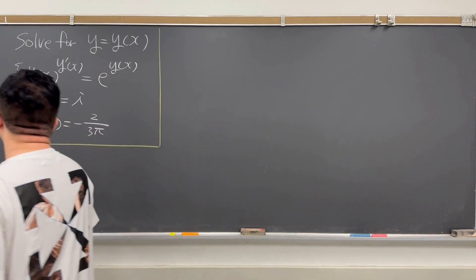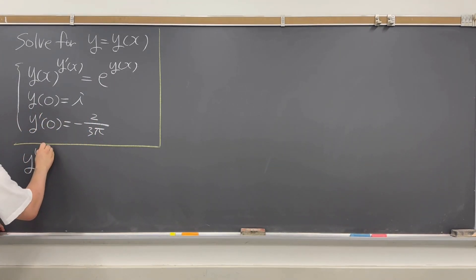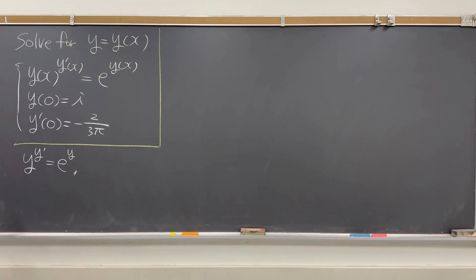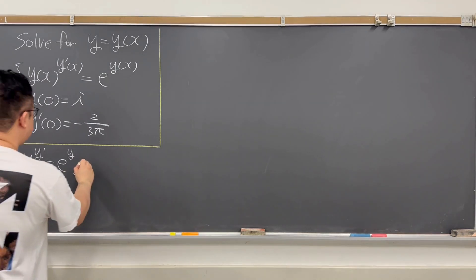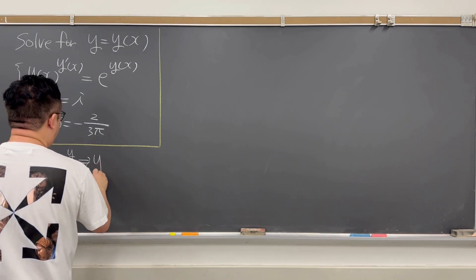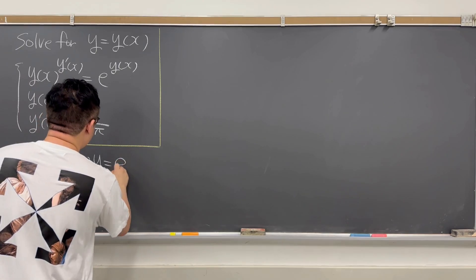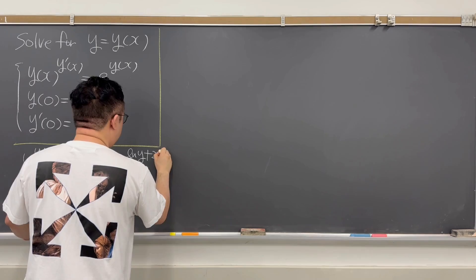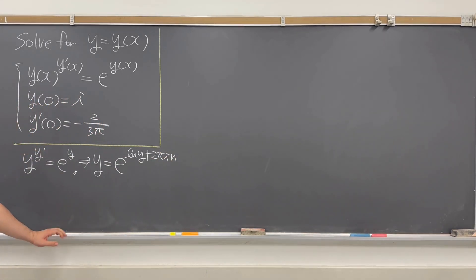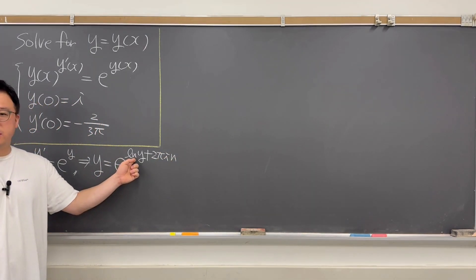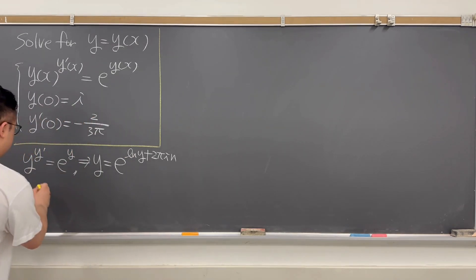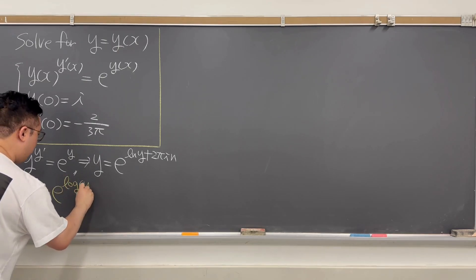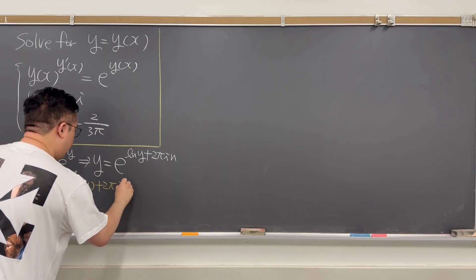We are working with y to the power of y′ = e to the power of y. For the basic setup, y has to equal e to the power of log(y) + 2πin. We can use the principal branch logarithm, so y = e to the power of log(y) + 2πin.